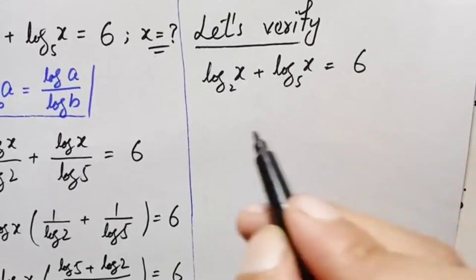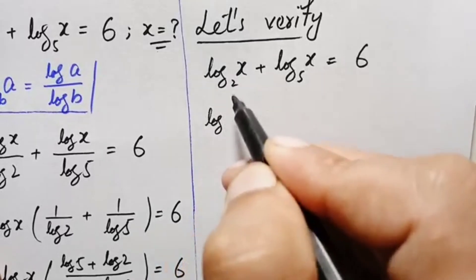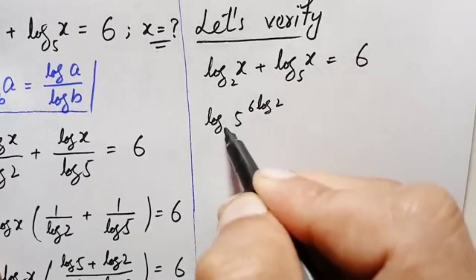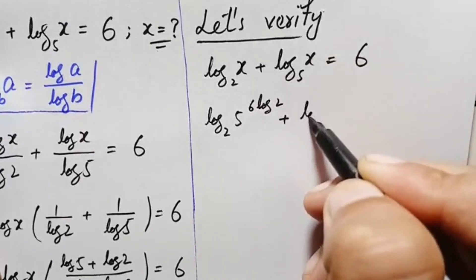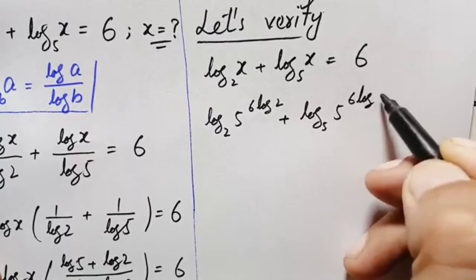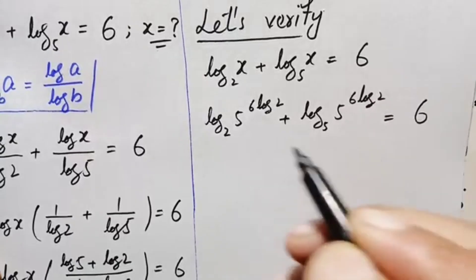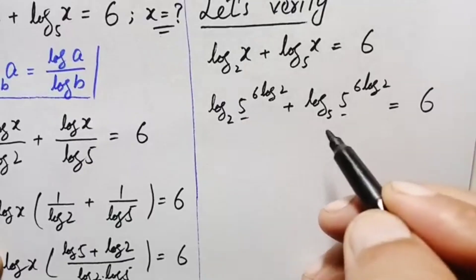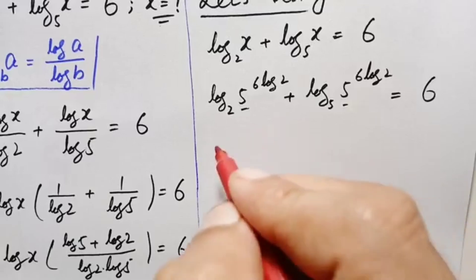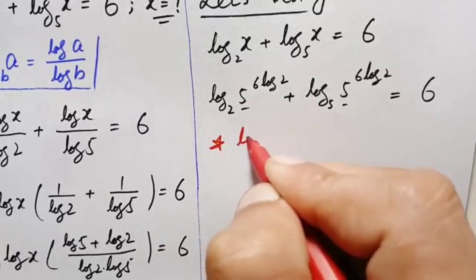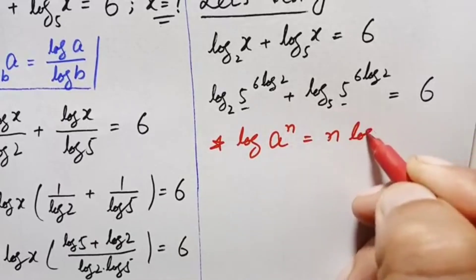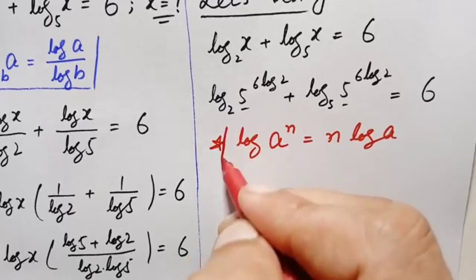Substituting x equals 5 raised to power 6 times log of 2 into the left hand side, and applying the logarithm property log of a raised to power n equals n times log of a, we move the exponent to the front of each log term.